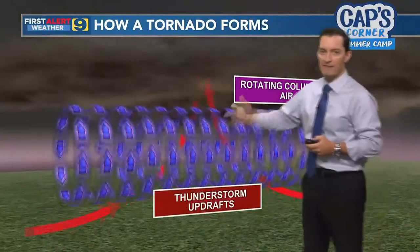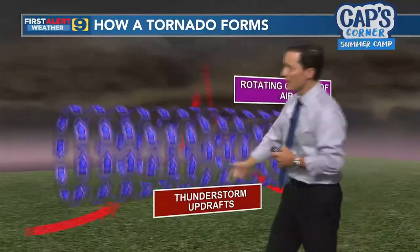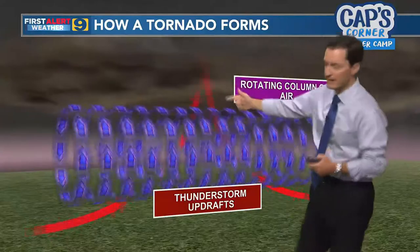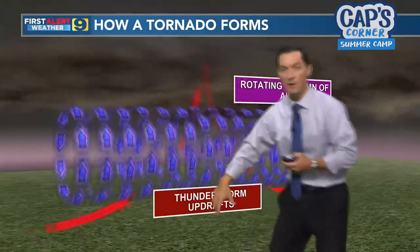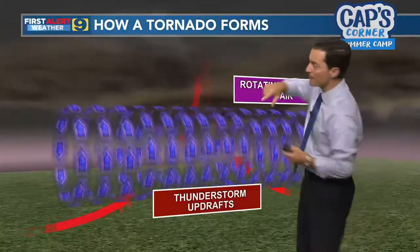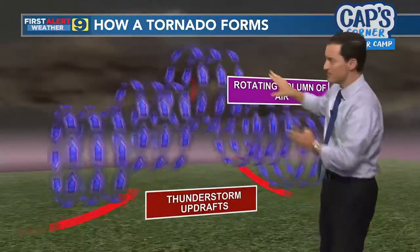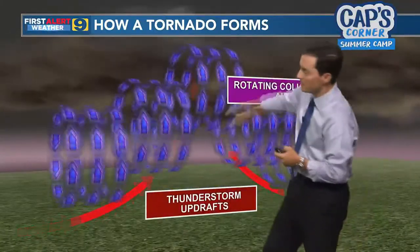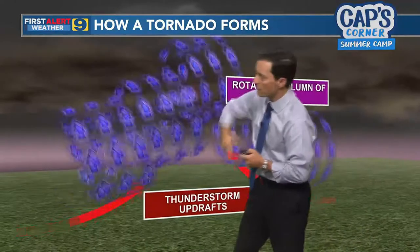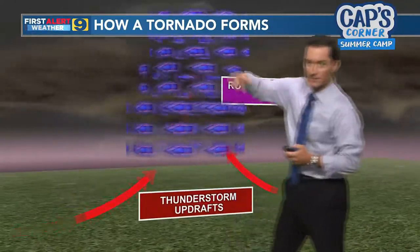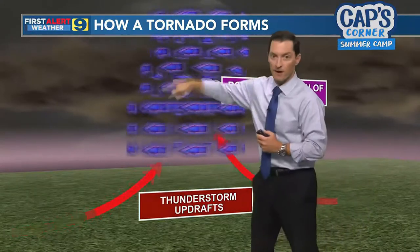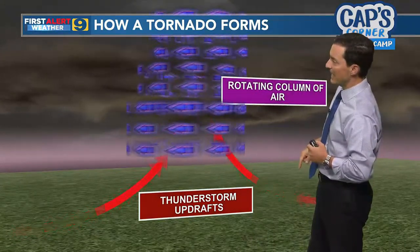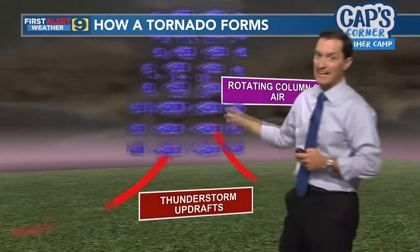When we have a thunderstorm overhead and we start to get a column of air rotating like this, we also have some air that's blowing up into the storm — we call that the updraft. What that will sometimes do is start to tilt this column of rotating air from being horizontal to vertical. And now we've got the beginnings of a tornado potentially on the way.